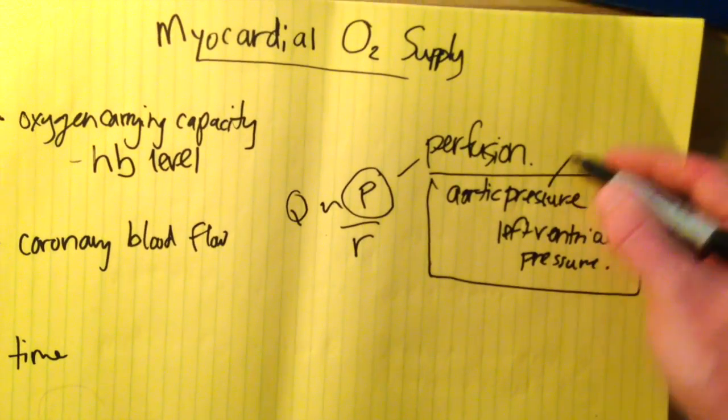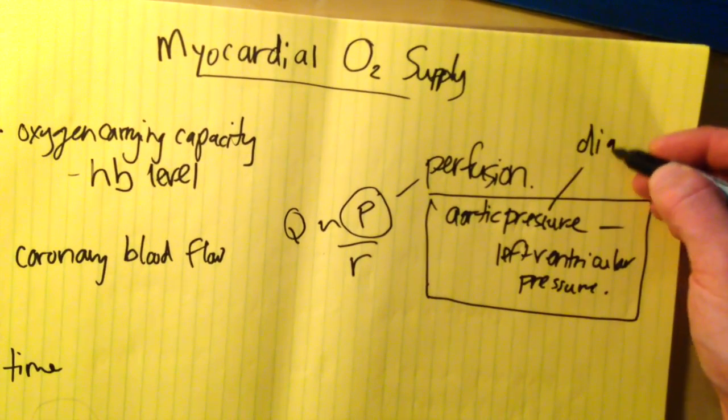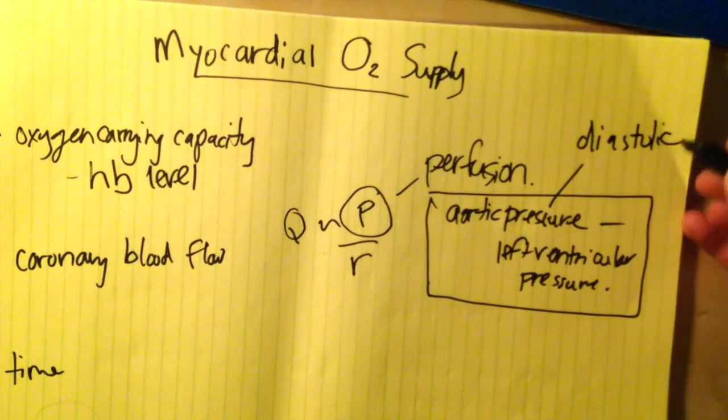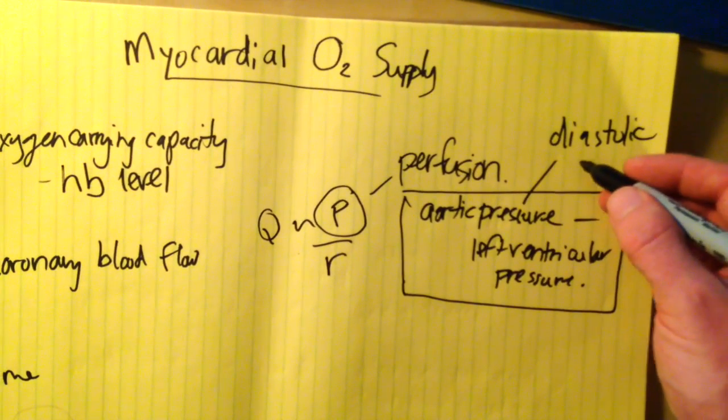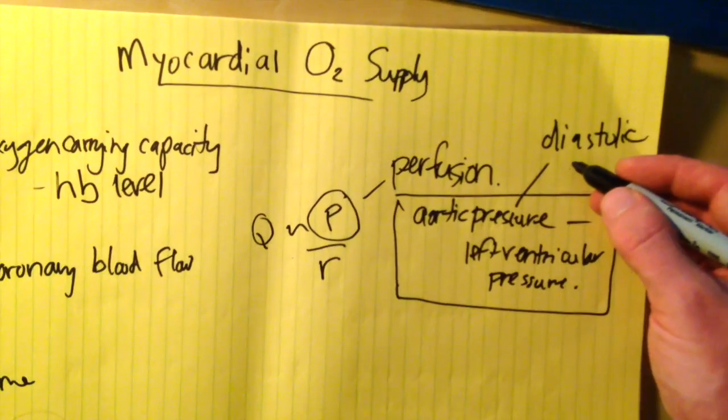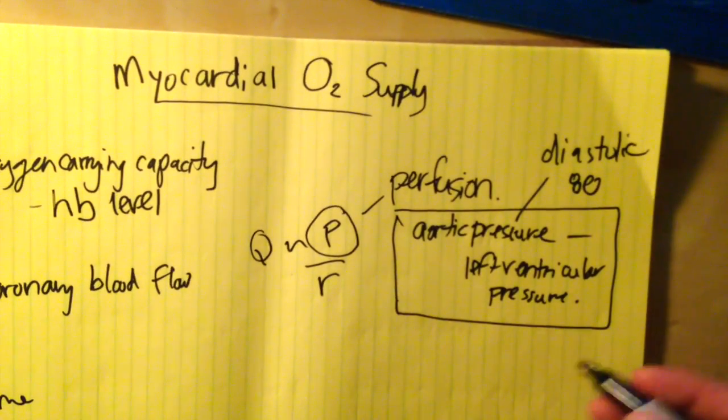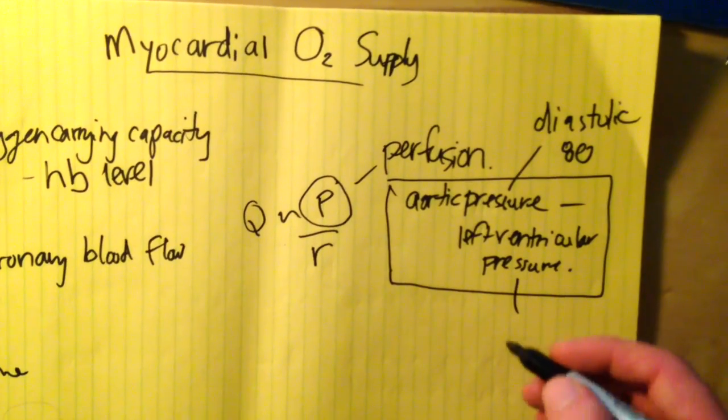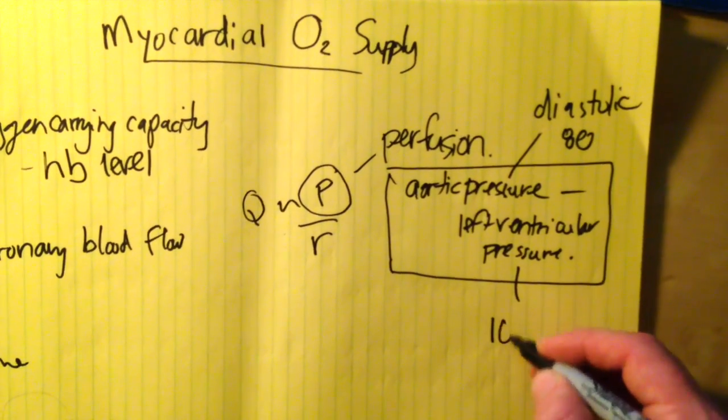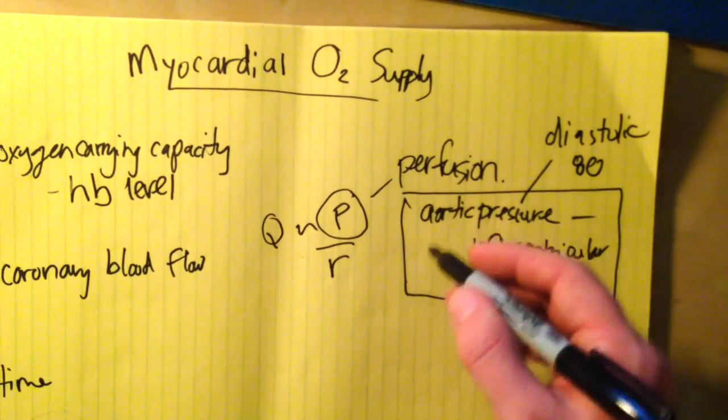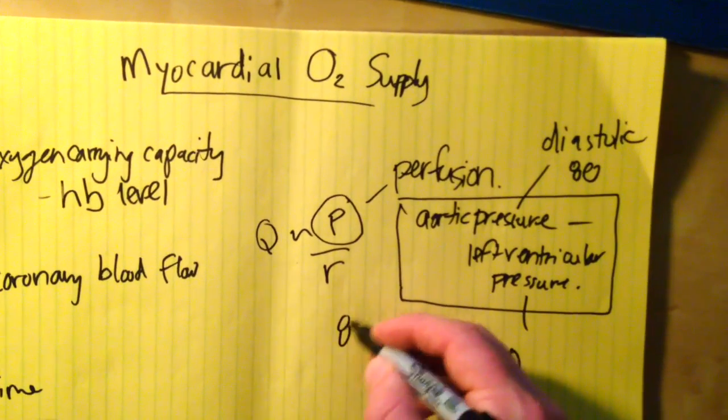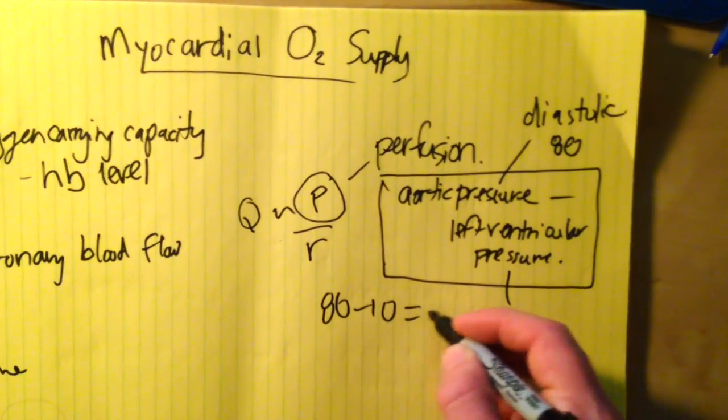You can imagine this is our diastolic pressure, which in a normal person is, let's say, 80 - as in 120 over 80. And our left ventricular pressure at the end of diastole is usually 10. That means our coronary perfusion pressure is 80 minus 10, which equals 70.